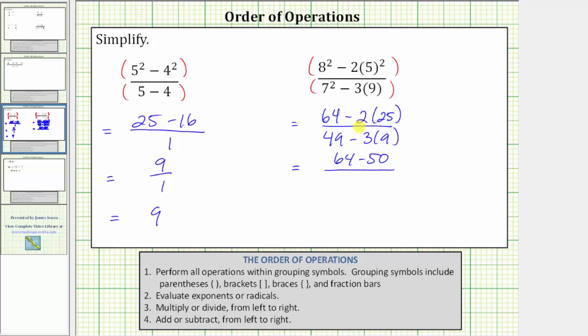Now looking at the denominator, we multiply before we subtract. Three times nine equals 27. The denominator simplifies to 49 minus 27.